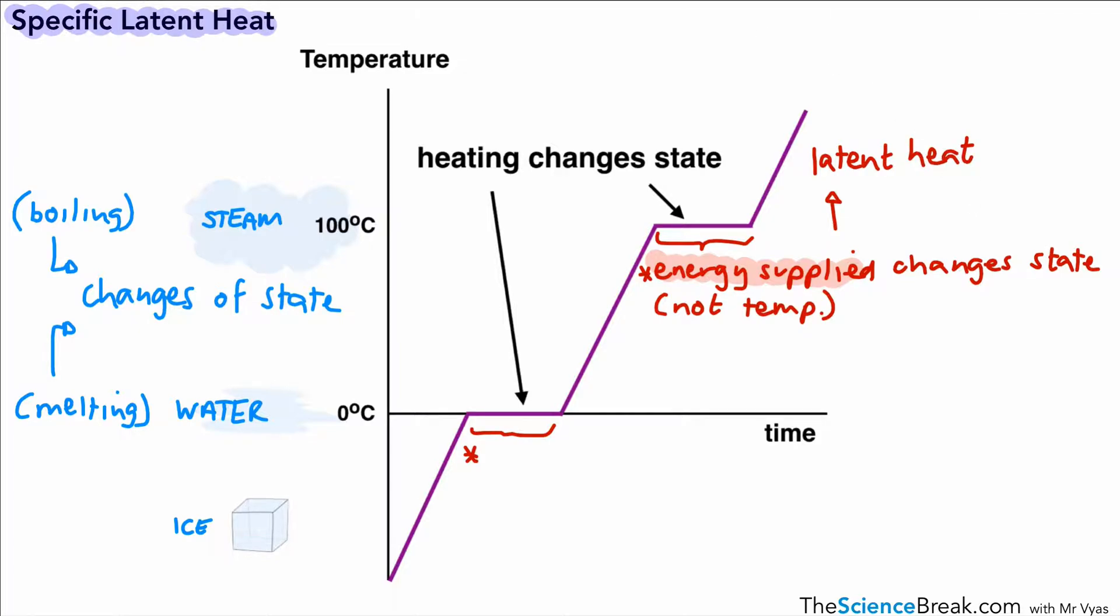But we don't want to know just latent heat; we want to know specific latent heat. So what's the difference? Well, specific latent heat refers to exactly one kilogram of a substance. When we have one kilogram of a substance and we're changing the state of that, the energy required to change that one kilogram of substance to a different state is called the specific latent heat, and that's quite an important definition.